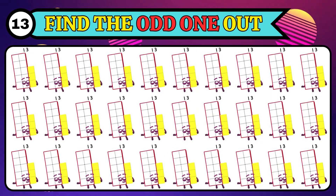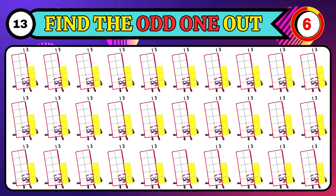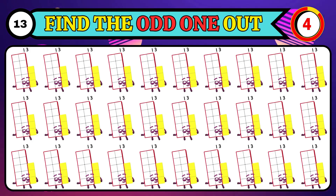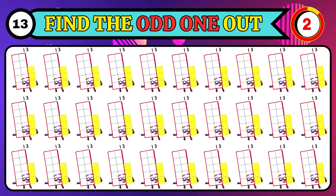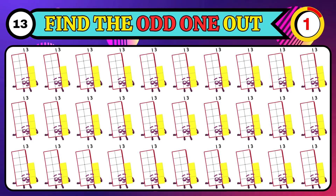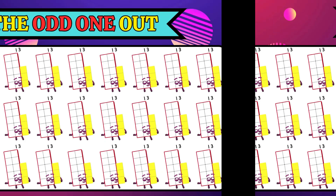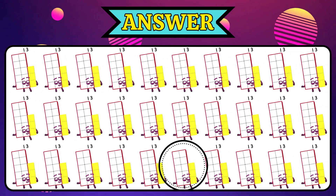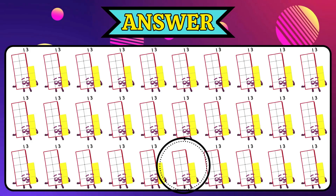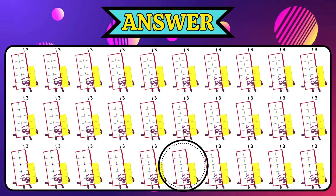Can you spot the odd thirteen? Yes! The odd thirteen can be found in the last row, sixth column.